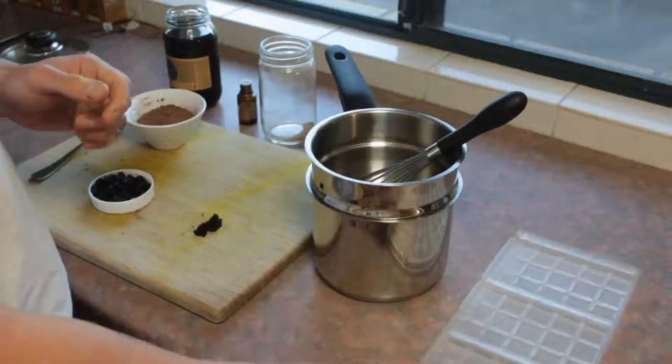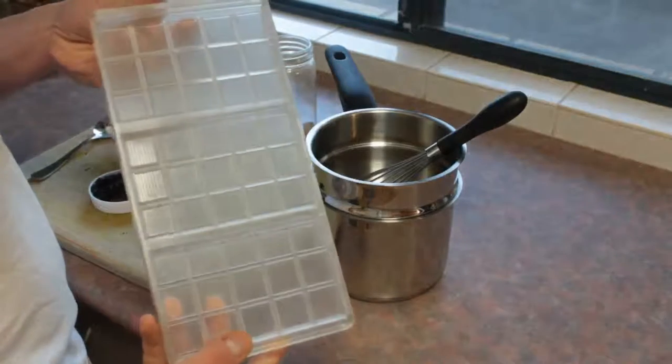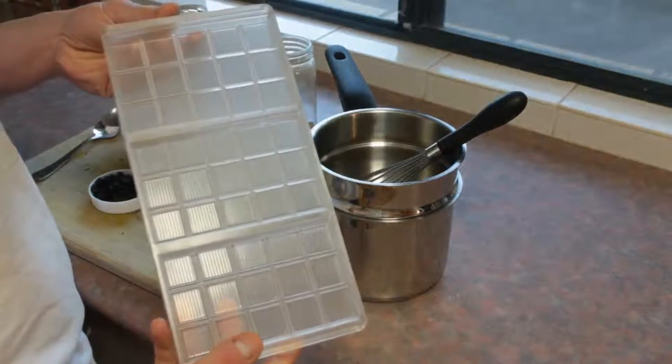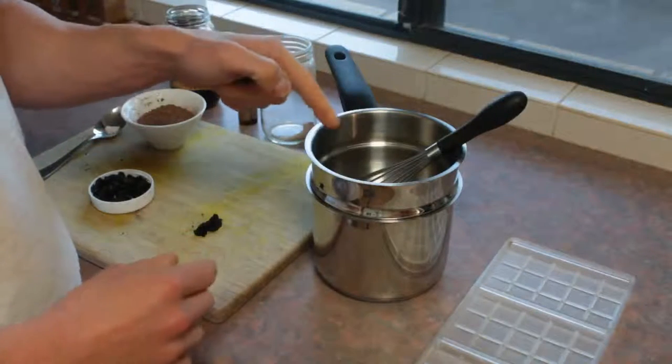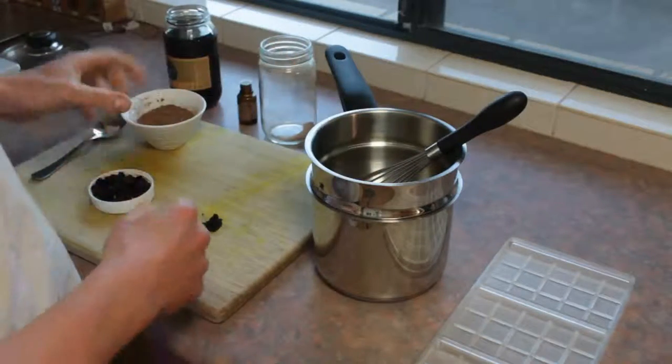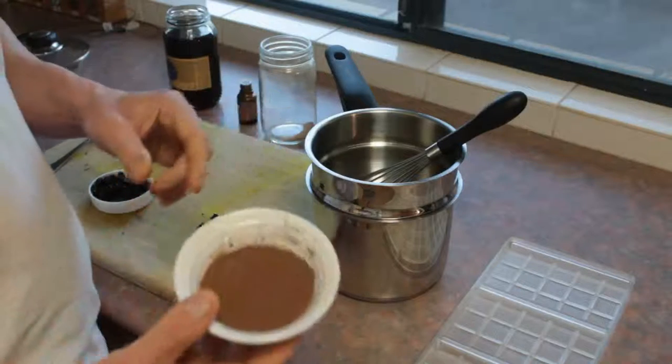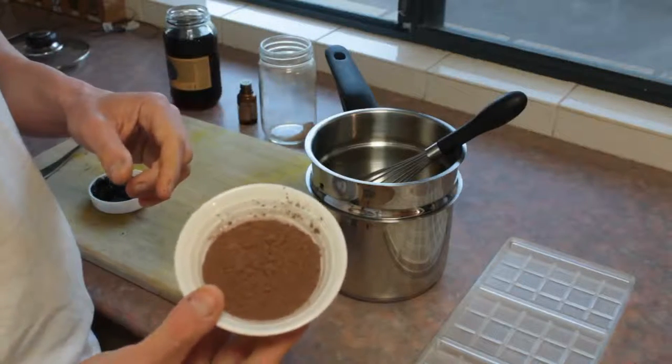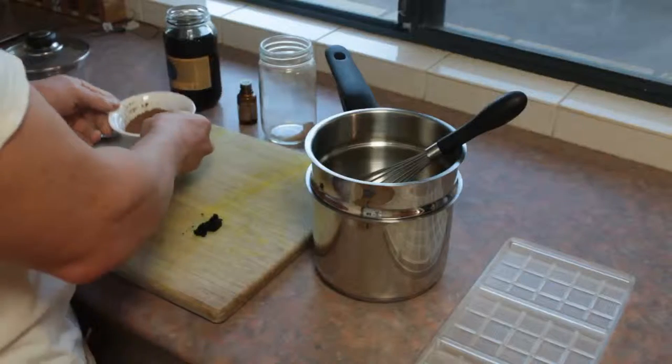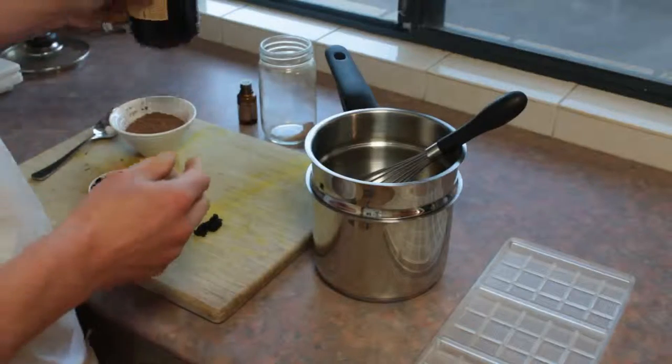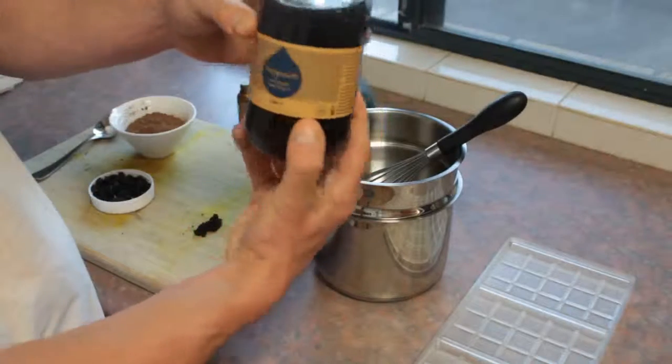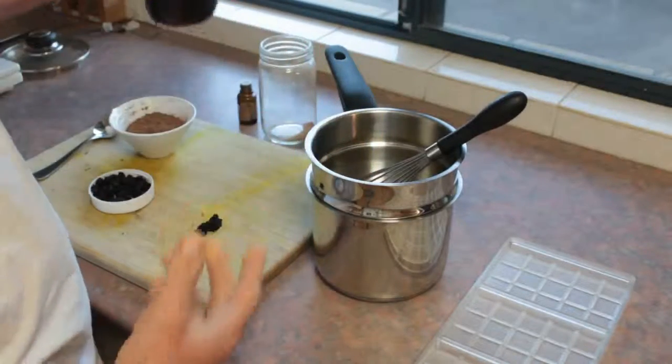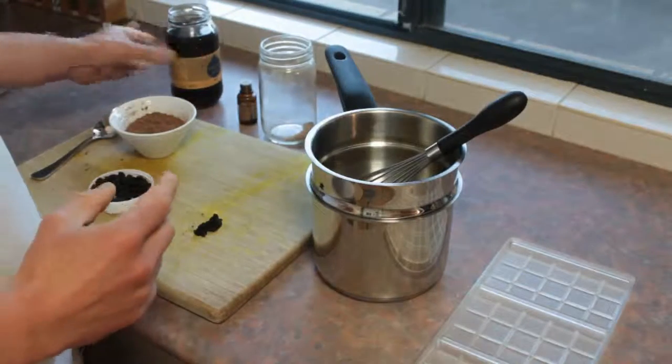When I make it, because I use this block to mold my chocolate, I do 80 grams of the cacao butter, 40 grams of cacao powder, and then I generally do about a tablespoon or two of agave syrup. I use the dark version and then I tweak it a little bit.